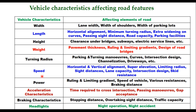Speed is extremely important and is used in the design of every element of the road: horizontal and vertical alignment, super elevation, limiting radius, sight distance, lane capacity, intersection design, and skid resistance. Power of the engine will decide rolling and limiting gradient, speed of the vehicle, and various resistances offered during movement. Acceleration characteristics affect the time required to cross an intersection, passing maneuvers, and gap acceptance. Similarly, braking characteristics will decide stopping distance, overtaking sight distance, and traffic capacity. Headlights of the vehicle are important for night operation and night accidents.